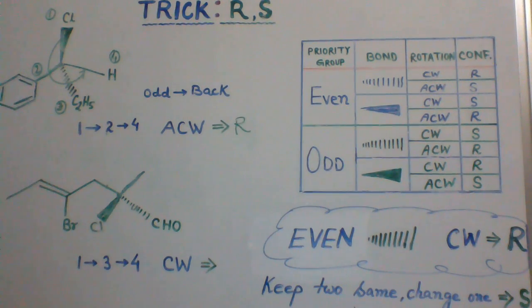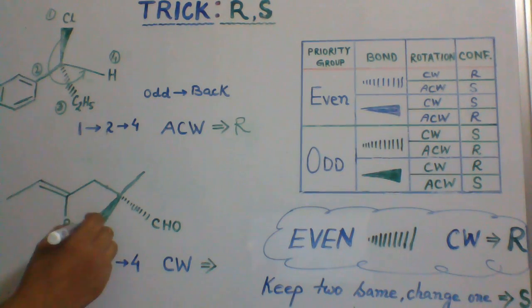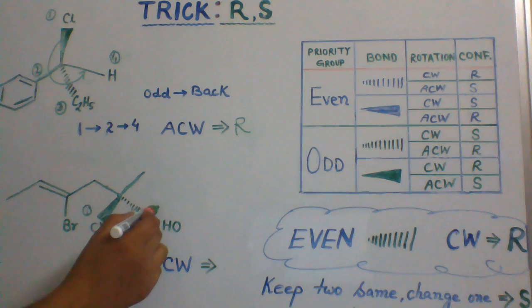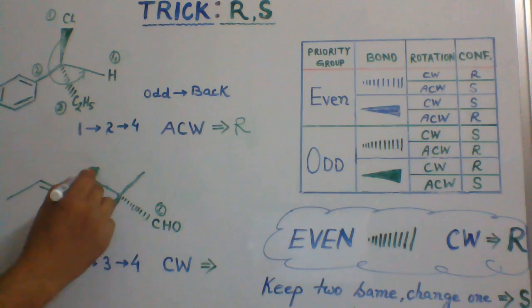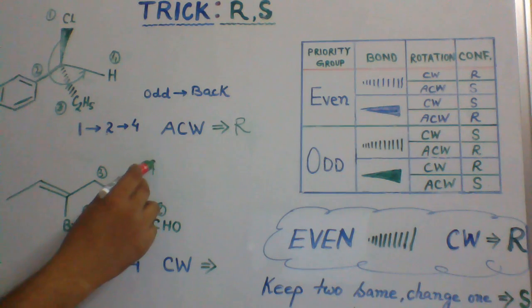Now let's take another molecule. Here, chlorine gets priority number one, the LDHT group two, this group three, and the methyl group priority number four.